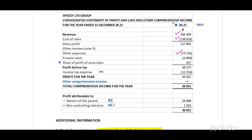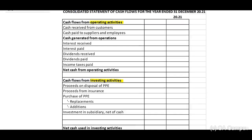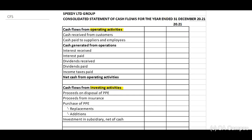We can now tick off cost of sales, revenue, and other expenses. I need to look at finance costs — the amount is 6,890. Looking at the cash flow statement template: at the top we have cash received and cash paid. I need to transfer calculation numbers for interest received, interest paid, dividends received, dividends paid, and income tax paid.